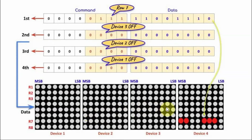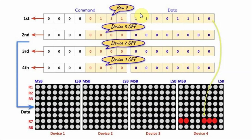To program an 8x32 module made of four devices, we need to send the command and data bytes four times. For example, if we want to display a byte value on row 7 of device 4, we send a specific 16-bit value. Then we turn off devices 3, 2, and 1 by sending all zeros.